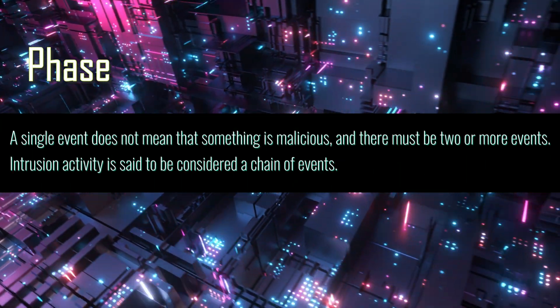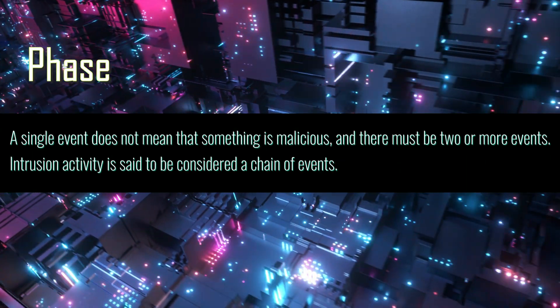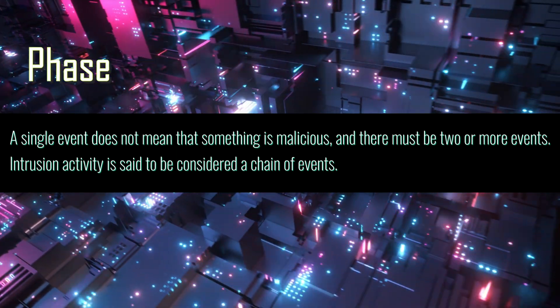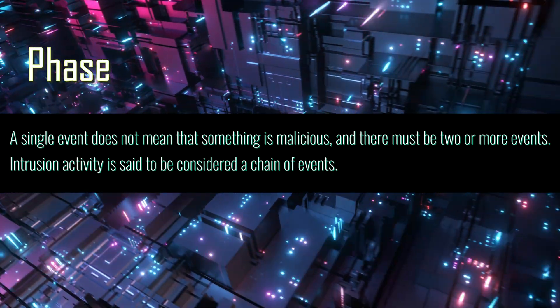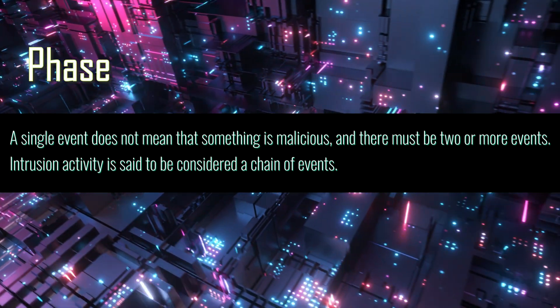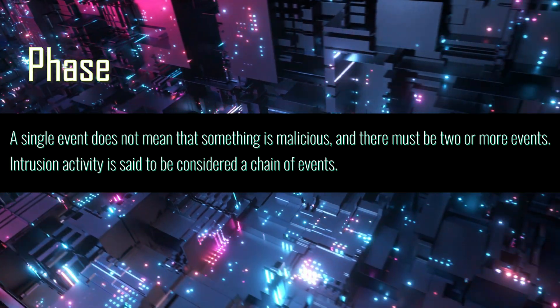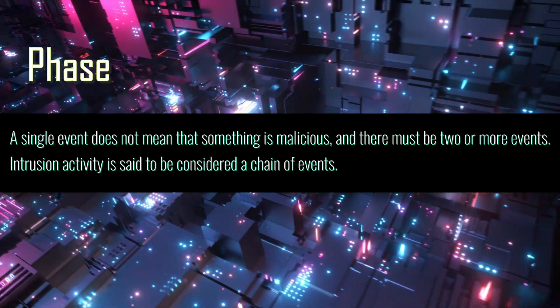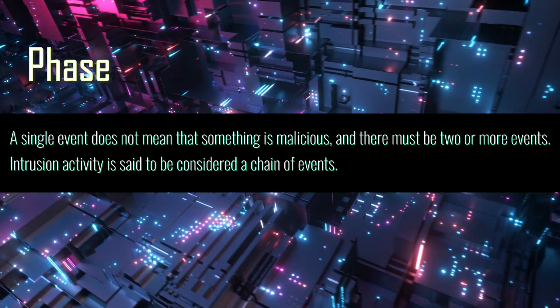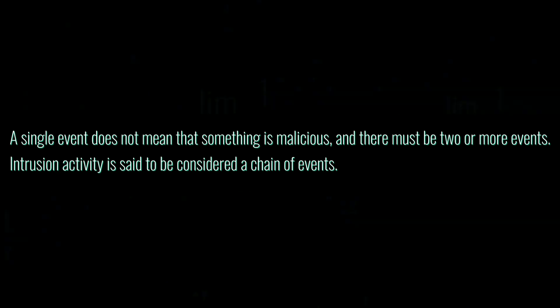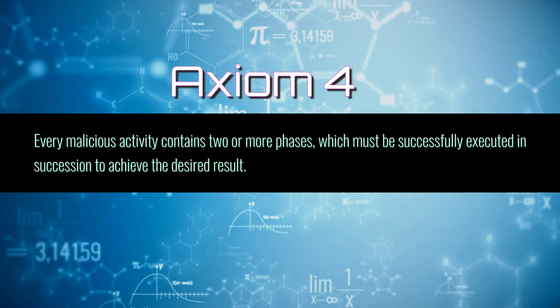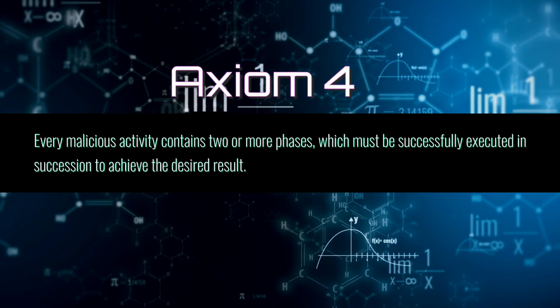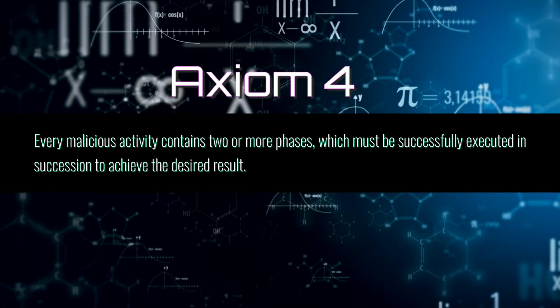Next is phase. A single event does not mean that something is malicious; there must be two or more events. Intrusion activity is considered a chain of events. An example would be when an adversary must find a victim, doing reconnaissance such as scanning, then discovers a vulnerable asset, exploits that asset, and establishes command and control. Axiom 4 states that every malicious activity contains two or more phases, which must be successfully executed in succession to achieve the desired result.